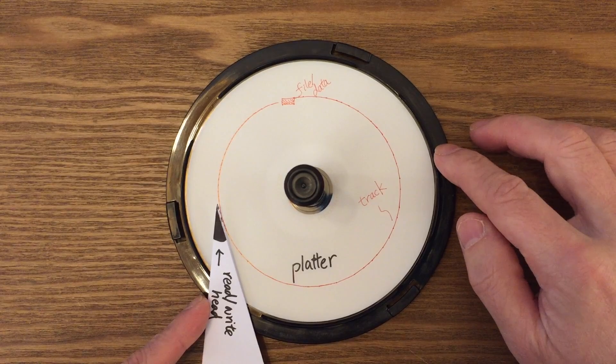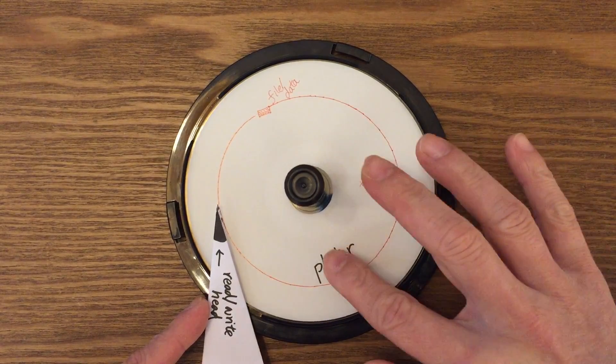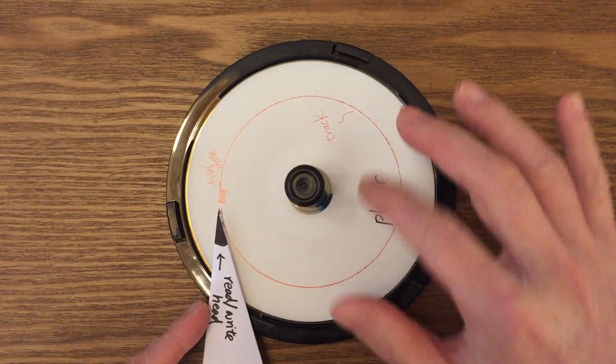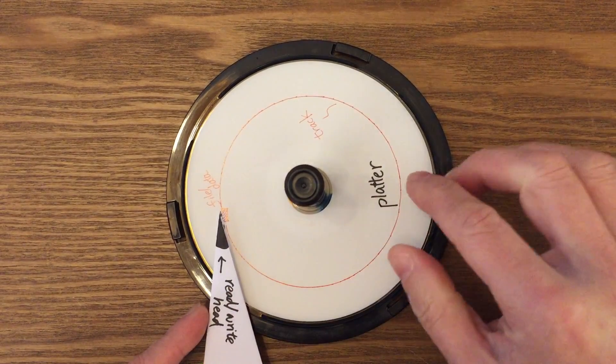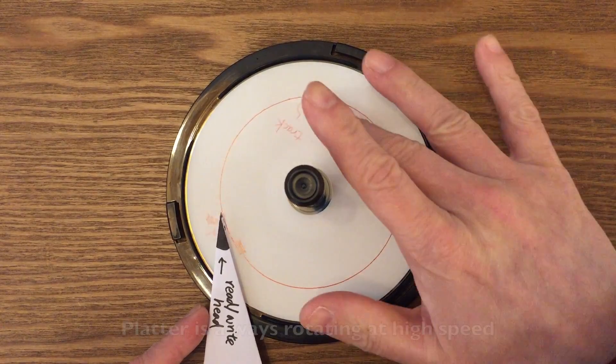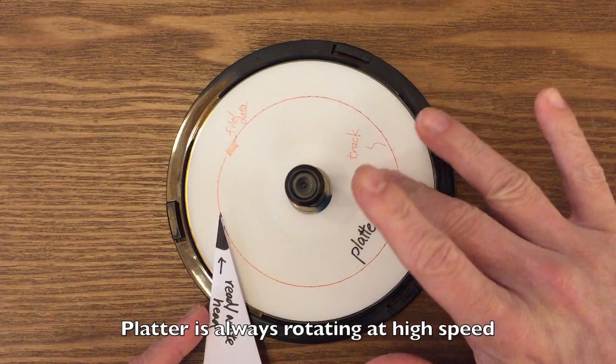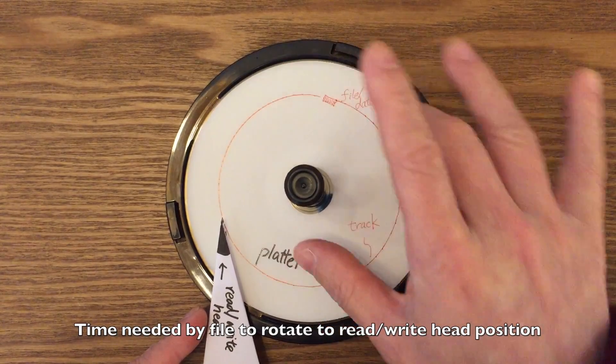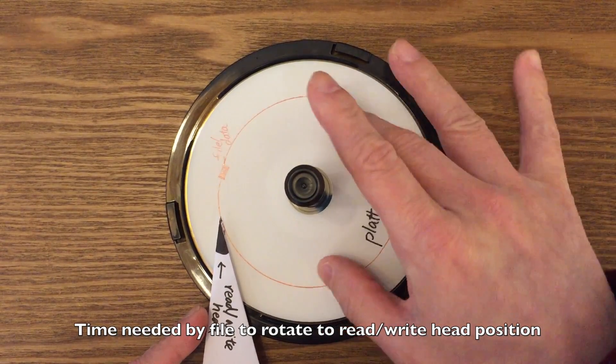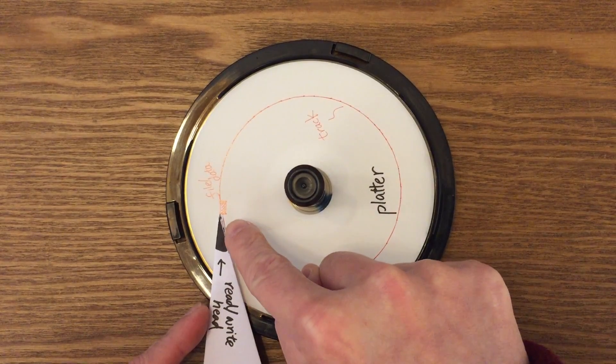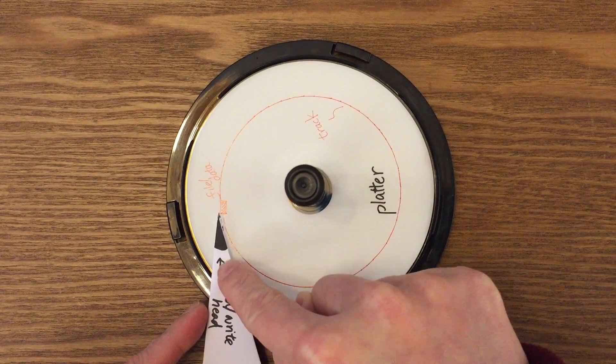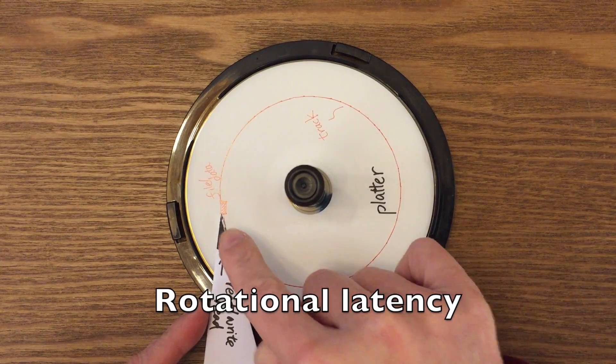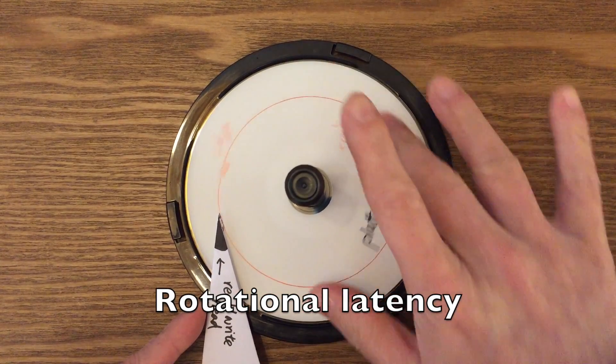And then for the second part, it has to wait until the file is rotated underneath the read head. Of course, this is the hard disk. This platter is always rotating at a very high speed, but it still needs this second time for the file to rotate to the position which is directly underneath the read head. We call this the rotational latency.